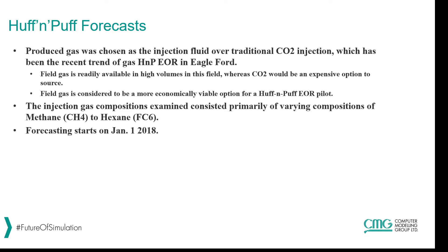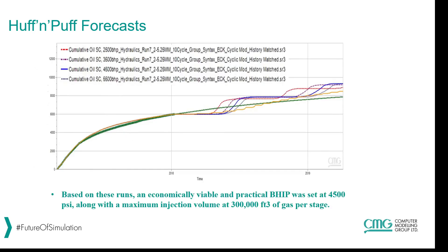The forecasting starts on January 1st, 2018, with two sensitivities modeled: bottom hole injection pressure and cycle time. For injection pressure, an economically viable bottom hole pressure of 4500 psi was set along with a maximum injection volume of 300,000 cubic feet of gas per stage. The 4500 psi BHP case yields the best oil recovery after several cycles of Huff and Puff because this pressure is above the miscibility pressure, maximizing the impact on oil production.